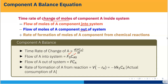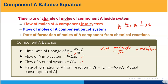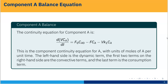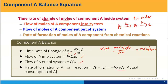Checking units: d(VCa)/dt has units of volume × (moles/volume) / time = moles/time, consistent with flow terms. The rate of formation of A — since the reaction is A→B→C, there is no formation of A, only consumption — so the reaction term is V·(-Ra) = -V·K1·Ca, since this is a first-order reaction where -Ra = K1·Ca. Combining all terms: d(VCa)/dt = F0·Ca0 - F·Ca - V·K1·Ca.